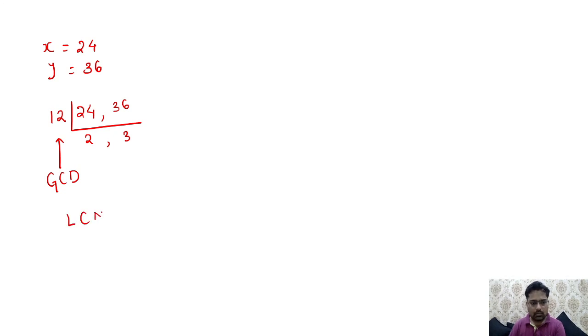I'm giving you an example: suppose x = 24 and y = 36. If you want to find the GCD, you can take 12, then 2, then 3. The GCD is 12. If you want to find the LCM, it should be 12 × 2 × 3.